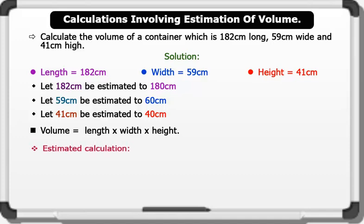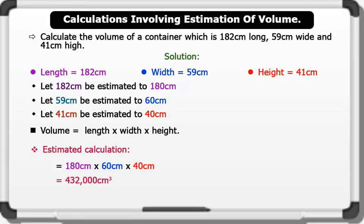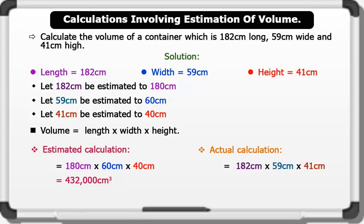Now let's see the estimated calculation. 180 centimeters times 60 centimeters times 40 centimeters. This gives us an estimated value of 432,000 centimeters cubed. Let's see the actual calculation. 182 centimeters times 59 centimeters times 41 centimeters. This gives us an actual value of 440,258 centimeters cubed.